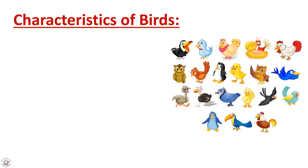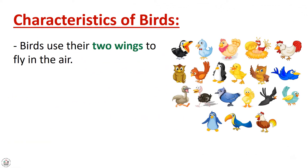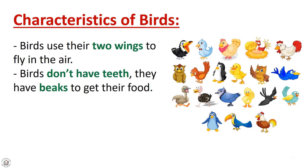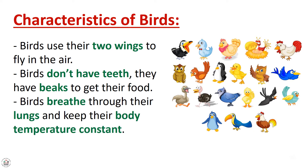Characteristics of birds: birds use their two wings to fly in the air. Birds don't have teeth; they have beaks to get their food. Birds breathe through their lungs and keep their body temperature constant.